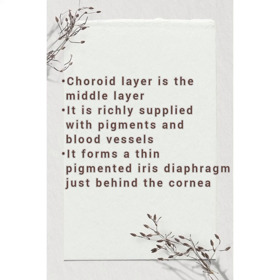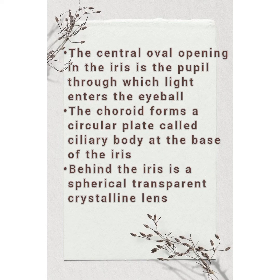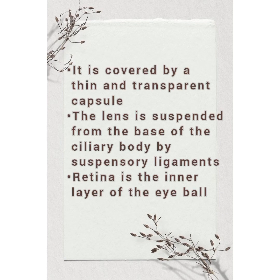The choroid layer is the middle layer. It is richly supplied with pigments and blood vessels. It forms a thin pigmented iris diaphragm just behind the cornea. The central oval opening in the iris is the pupil, through which light enters the eyeball. The choroid forms a circular plate called the ciliary body at the base of the iris. Behind the iris is a spherical transparent crystalline lens, covered by a thin transparent capsule, suspended from the ciliary body by suspensory ligaments.